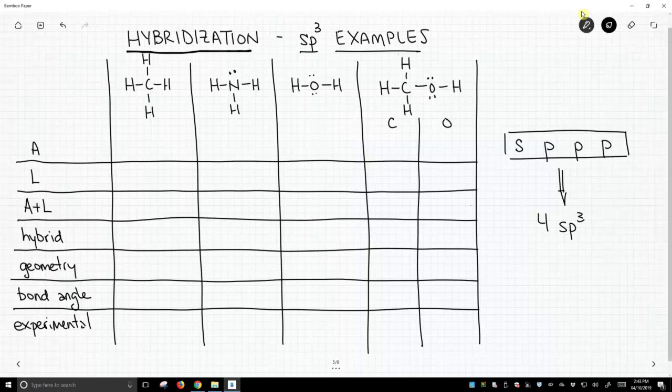So let's look at our structures. Number one in our table is methane. The carbon in methane is attached to four hydrogen atoms, so A equals four. We have zero lone pairs on carbon, so L equals zero. A plus L equals four.